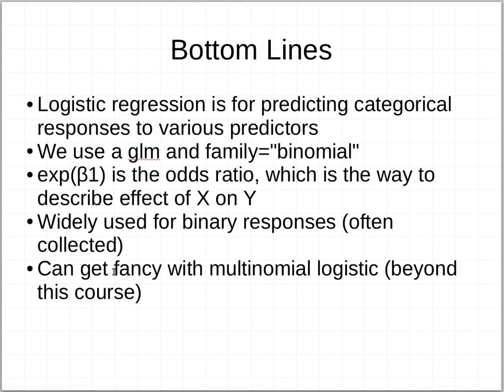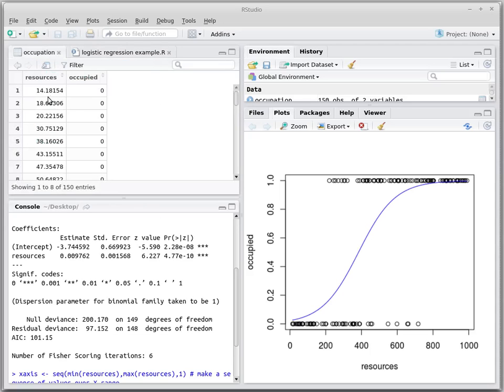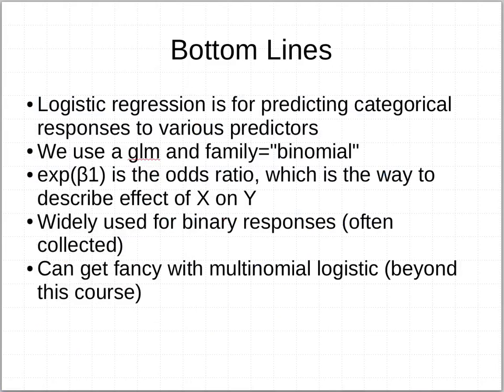And, like I mentioned, you can get pretty fancy with multinomial logistic models and lots of possible explanatory X variables. The data set I was playing with, obviously, was pretty simple, where we were just looking at one X to explain one Y variable that was binary. You could have a non-binary multinomial here, but you can have many, many versions of X explanatory predictor variables as well. And, of course, then you're getting into other model comparison kind of approaches like we've been using all semester to decide which of your explanatory factors might be more parsimonious than other ones.